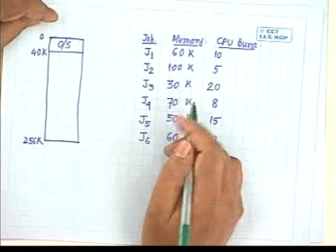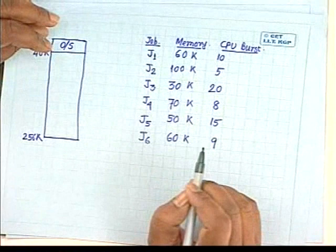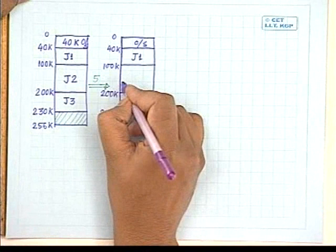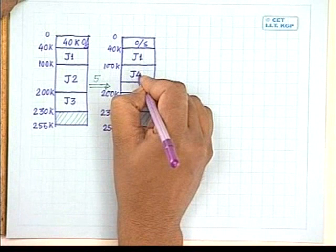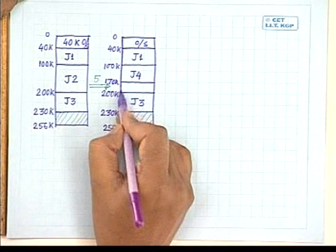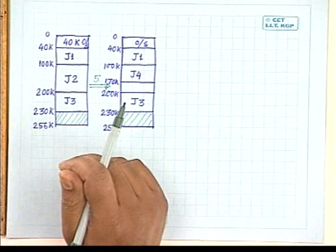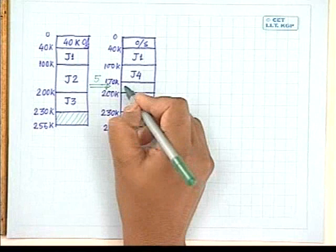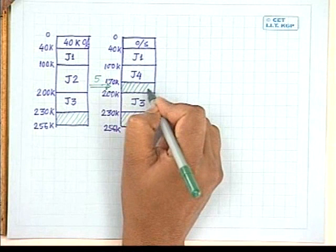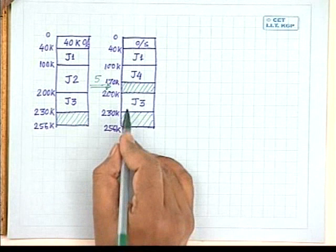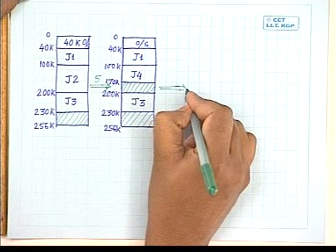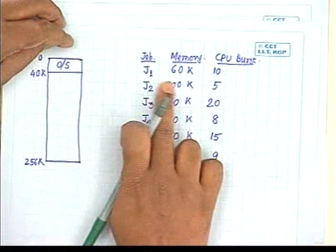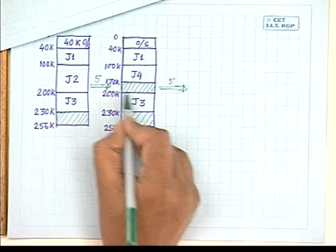After allocating J4, the remaining 30 KB free partition cannot accommodate J5 (50 KB) or J6 (60 KB). After 5 more time units — totaling 10 time units — J1 completes its execution (J1 had a 10-unit burst time and 5 units had already elapsed). So the 60 KB partition (40–100 KB) becomes free.